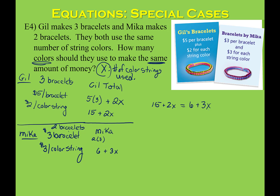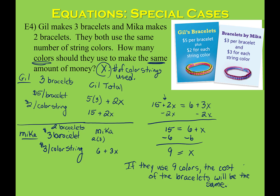We'll subtract 2x from both sides; the opposite of addition is subtraction. We're left with 15 on the left side and 6 plus x on the right side. Then we subtract six from both sides and we get x equals 9. Nine represents the number of strings used. So if they use nine colors of string, then the cost of the bracelets will be the same.